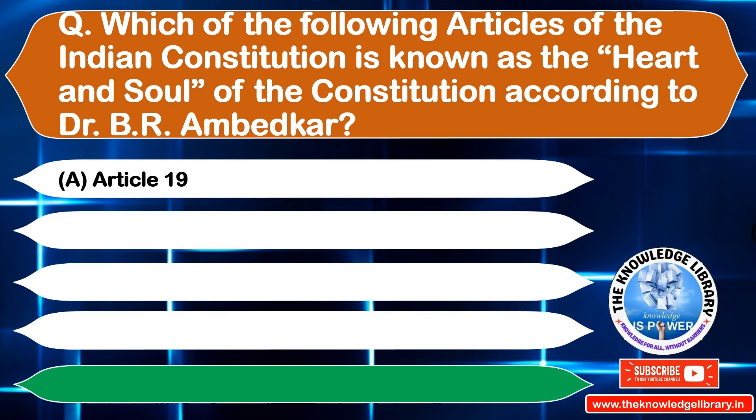The next question is: which of the following is correct about Article 24? Option A: Prohibition of child labor, Option B: Freedom of religion, Option C: Equality before law, Option D: Protection of life and liberty. The correct answer is Option A: Prohibition of child labor.